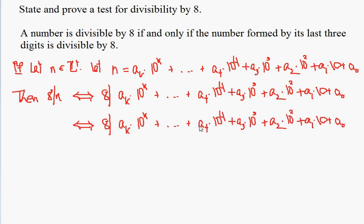8 divides that same expression minus a multiple of 8, and the multiple of 8 that I will choose goes like this: a sub k times 10 to the k, and then we subtract off a sub 3 times 10 to the third and stop there. Now why is this a multiple of 8?